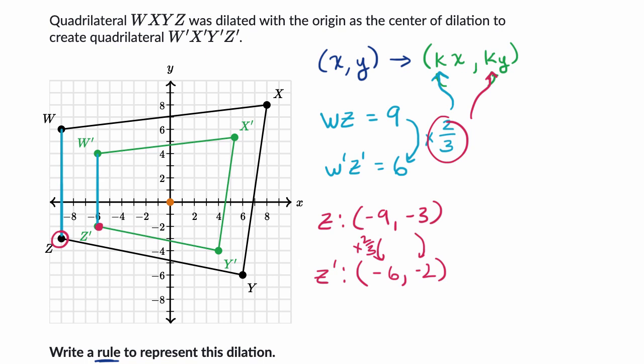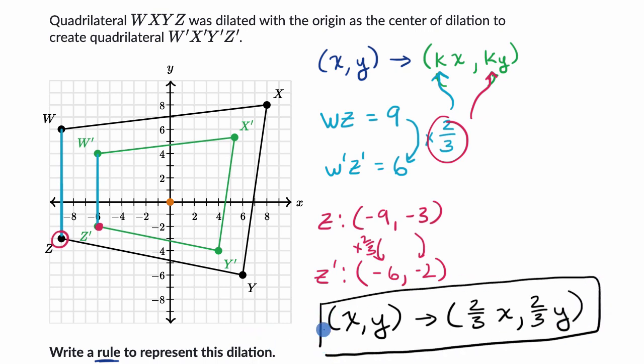That the rule to represent this dilation is, for any x, y on the original shape, it is going to get mapped to, instead of a k, we now know that k is two thirds. Two thirds of the original x, and two thirds for the new y coordinate of the original y. And we are done.